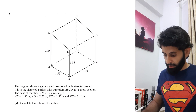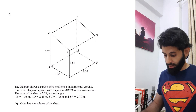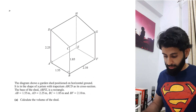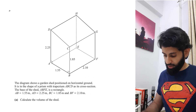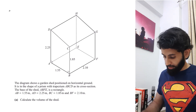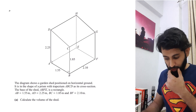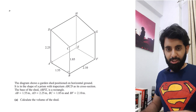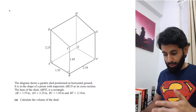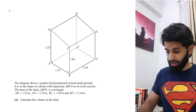This question is from the October/November 2020 Paper 2 Variant 1. It says: the diagram shows a garden shed positioned on horizontal ground, in the shape of a prism with trapezium ABCD as its cross section. The base of the shed ABFE is a rectangle. The given lengths are AB = 1.55, AD = 2.25, BC = 1.85, and BF = 2.10.